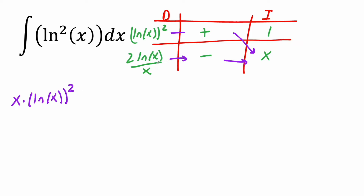Because I went straight through on this piece, I have to do something different. So I say plus the integral: I take this piece, times it by negative 1, times it by x, but I have to take the integral of it. So 2·ln(x) times negative 1 is negative 2·ln(x), and x times x cancel out.